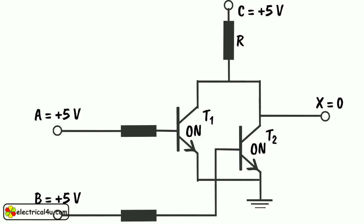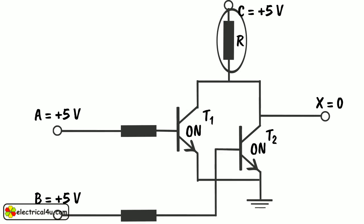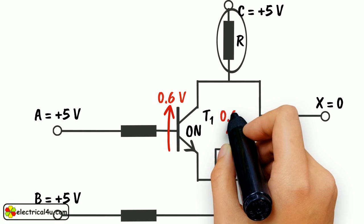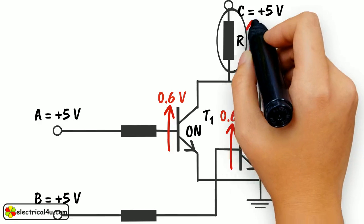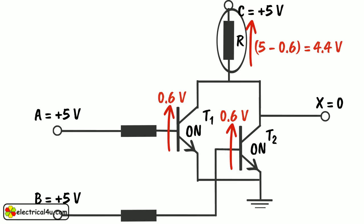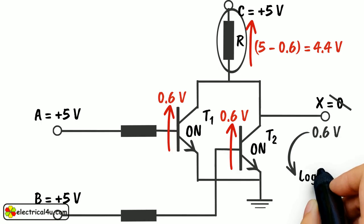Practically, a transistor cannot be ideally short circuited in ON condition. There will be a voltage drop between emitter and collector of the transistor even in ON condition. So practically entire supply voltage will not drop across resistor R. Instead a small portion of it and that may be 0.6V is dropped across saturated transistor. That is 5 minus 0.6 that equals 4.4V. Hence, voltage appears at output terminal X is not practically zero. Instead it will be 0.6V which is considered as logical zero.